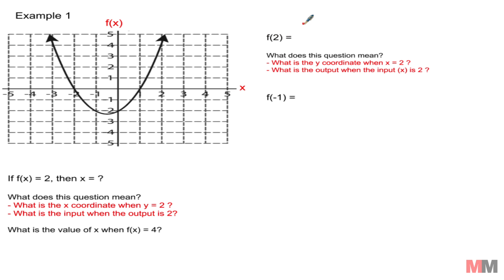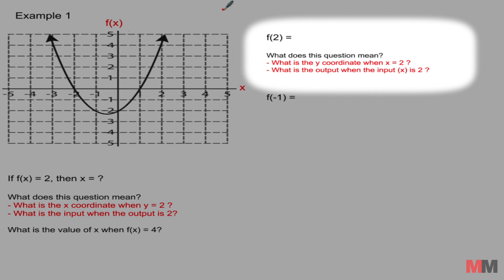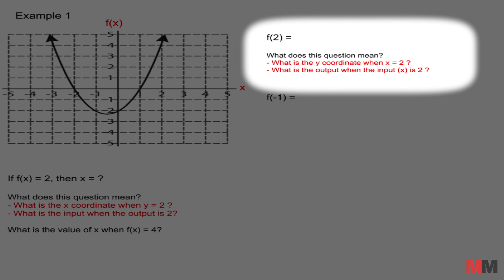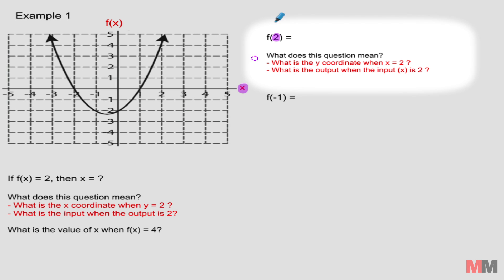I want you to understand how to read that question. It's just asking what is the y coordinate when x equals 2, or you might get that word output and input. What is the output? Output just represents your y when the input, your x, is 2. The number in this parenthesis represents your x when it's written in function notation. So that represents your x.